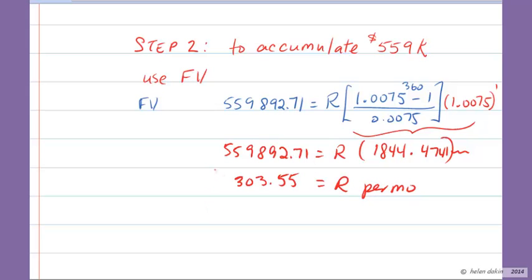So if she deposits $303.55 per month for the next 30 years, if she makes those deposits at the beginning of every month, she will be able to turn around and make monthly withdrawals of $5,000 for the subsequent 20 years.